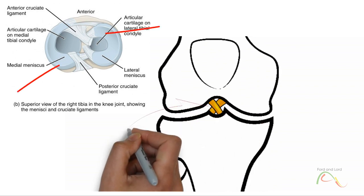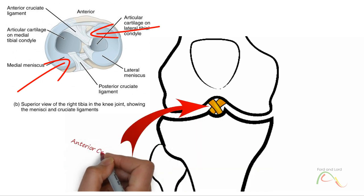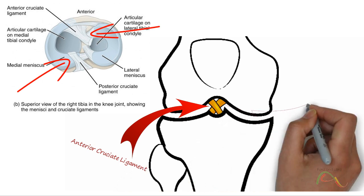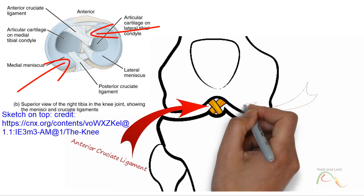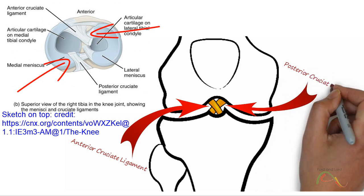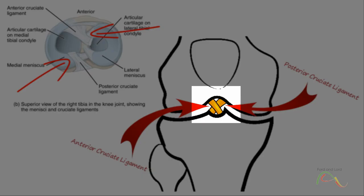Within the joint, there are two intracapsular ligaments: the anterior cruciate ligament and the posterior cruciate ligament. These ligaments are anchored inferiorly to the tibia at the intercondylar eminence, the area between the tibial condyles. The words anterior and posterior in the names of the cruciate ligaments represent their positions of attachment to the tibial condyle. The word cruciate actually means cross, and this term is used because of the X shape they make as they pass each other.